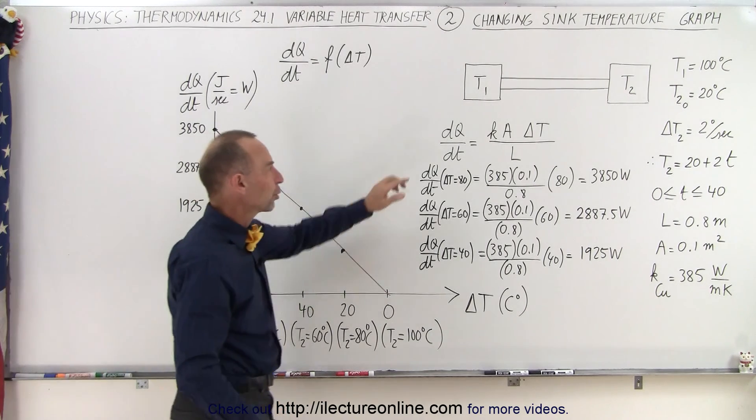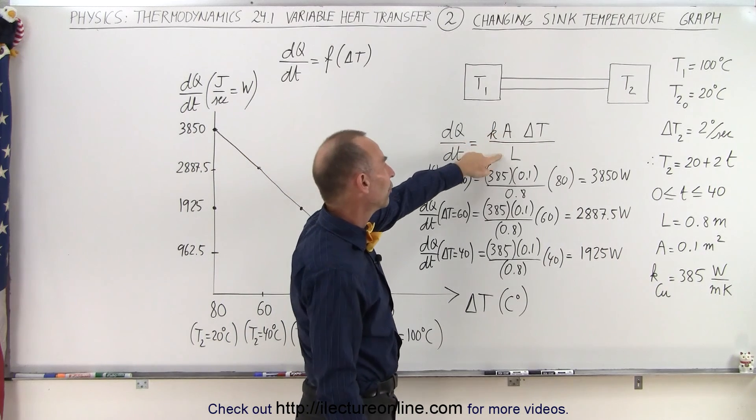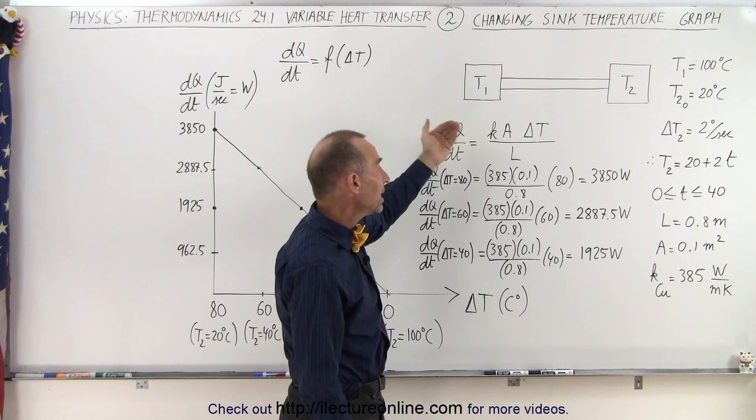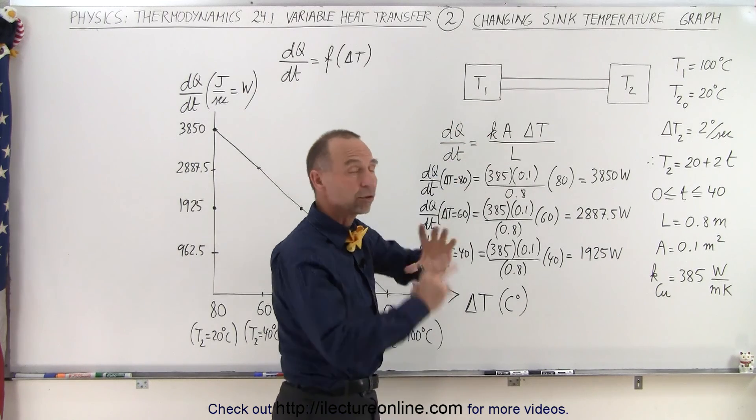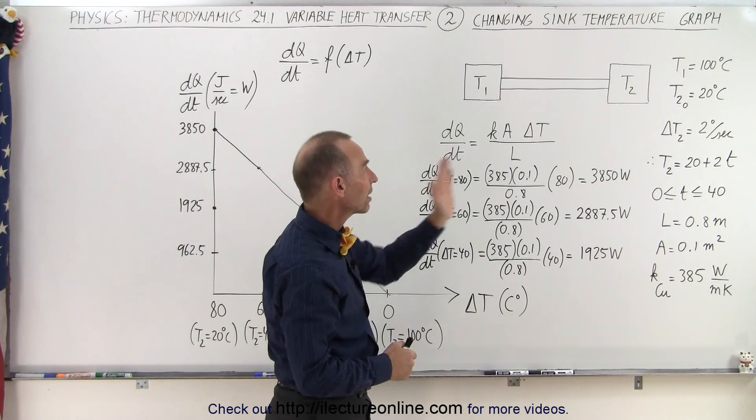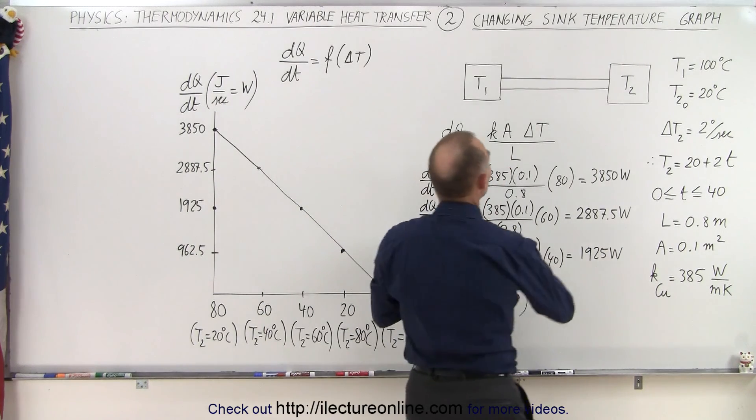So here we have our equation that dQ/dt is equal to KA over L times delta T. Now K is the heat conductivity coefficient, A is the cross-sectional area, L is the length of the heat conductivity path, so that would be this L right here.